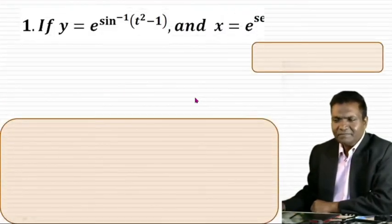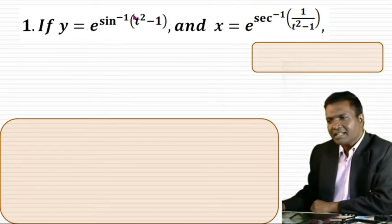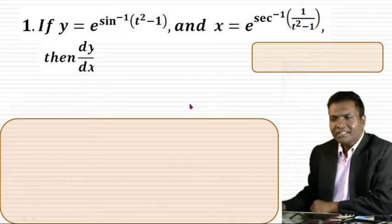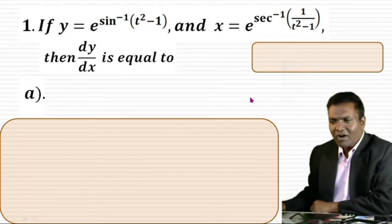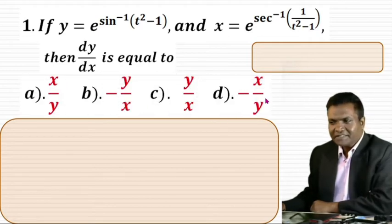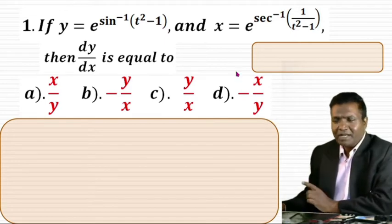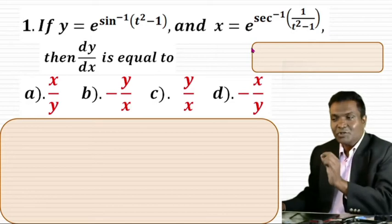Here is the first question. If y equals e to the power sin⁻¹(t²-1) and x equals e to the power sec⁻¹(1/(t²-1)), then dy/dx equals how much? So here are the four options. Very simple — it looks to be very complicated, but really you will enjoy this.